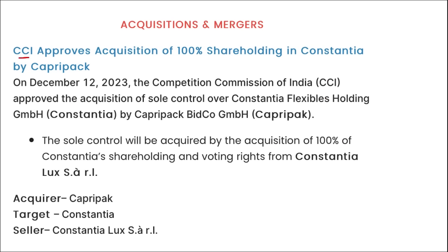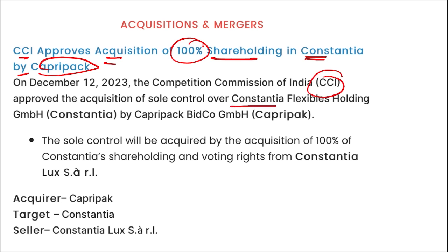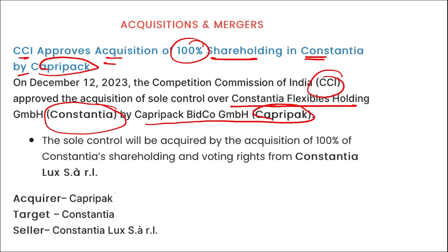CCI approved the acquisition of 100% shareholding in Constantia Flexibles Holdings by CapriPack Bidco GmbH. So Constantia will be fully acquired by CapriPack — the acquirer is CapriPack and the target is Constantia.